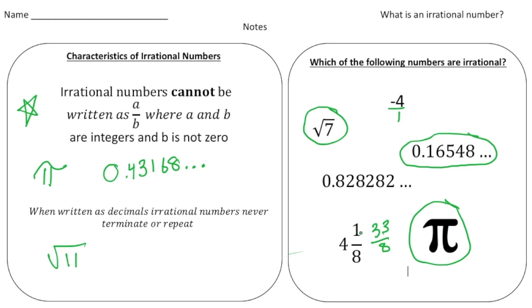Remember, key characteristics of irrational numbers: they cannot be written as fractions and if they are decimals, they go on forever and there's no pattern to them. Now that you understand what an irrational number is, why don't you pause the video and try the practice problems, and when you're done hit play to see how you did.